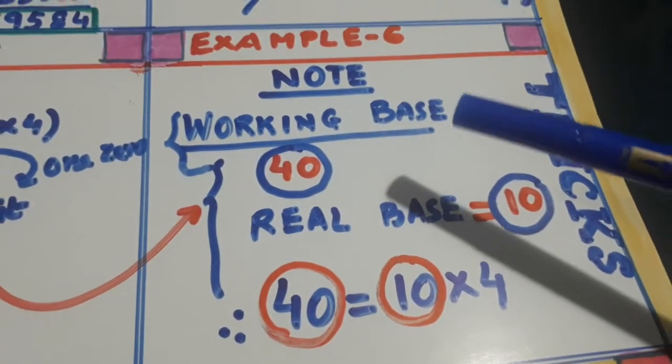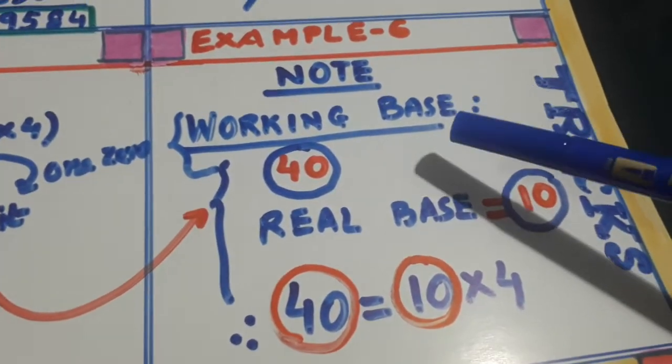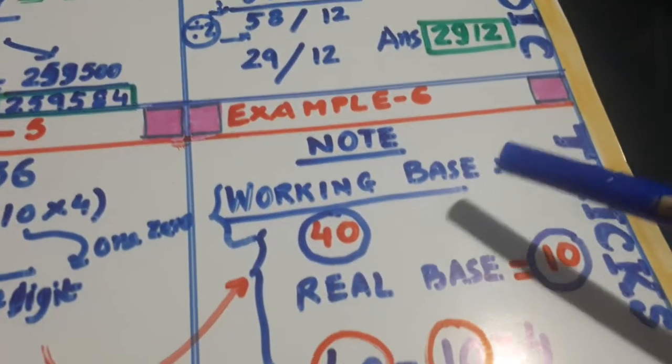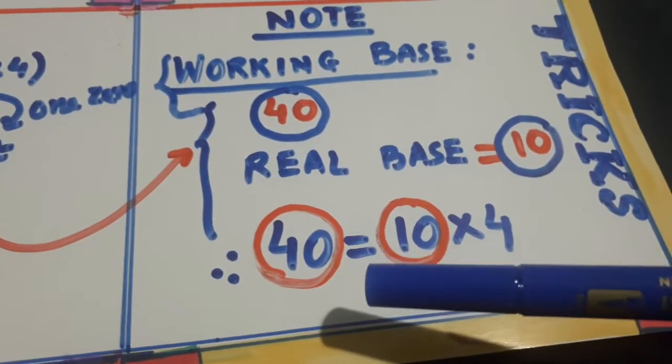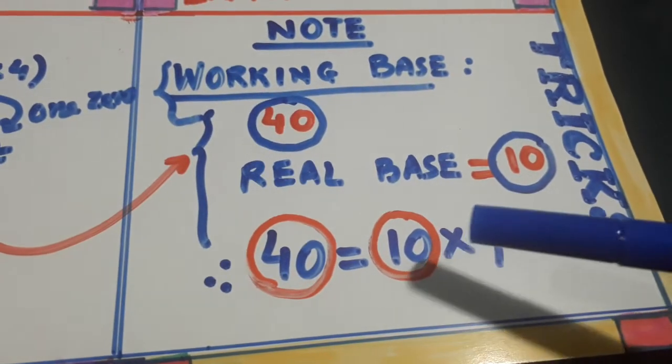Now last one is, look here, when the working base is 40, real base is 10, it can be written as 40 is equal to 10 into 4.